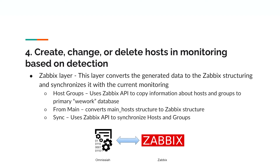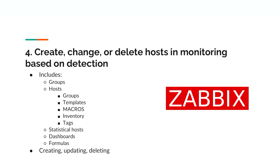The fourth and final step is to create, change, or delete hosts and monitoring based on detection. This is the stage where data is converted to match Zabbix structuring in order to synchronize with the current Zabbix instance. There are three main parts: first, host groups, where Omnisaya copies information about hosts and groups to the primary WeWork database; second, from main, where the main hosts output from step 3 is put into a Zabbix structure; and third, sync, which uses the Zabbix API to synchronize hosts and groups. Specifically, Omnisaya is syncing groups, hosts, statistical hosts, dashboards, and formulas with Zabbix.